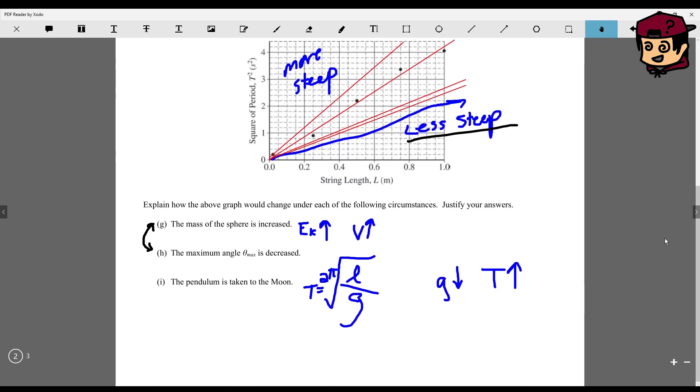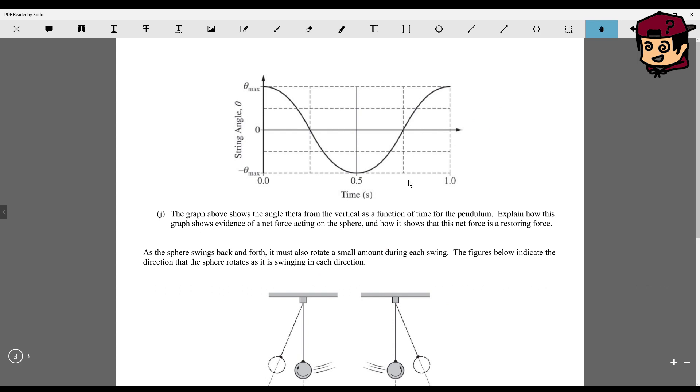Now here, the graph shows the angle theta from the vertical as a function of time. Explain how this graph shows evidence of a net force acting in the sphere and how it shows that this net force is a restoring force. Well, we can see that the displacement is being restored. It's going from one to the other to the next, and there's no constant slope. So it's always experiencing acceleration or deceleration of some sort, which means there's an acceleration. And acceleration means there's a force. And so you could just say net force because there's an acceleration. That means there's a force. And this net force is a restoring force because it's restoring the displacement.